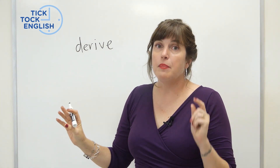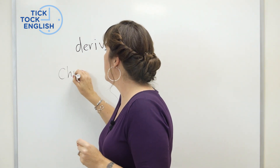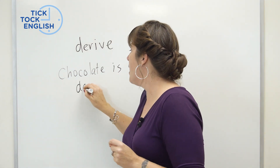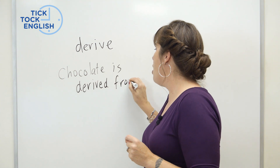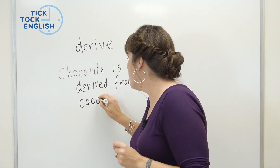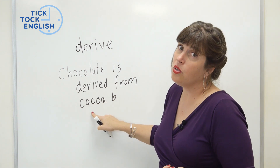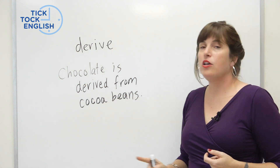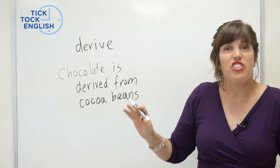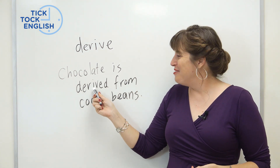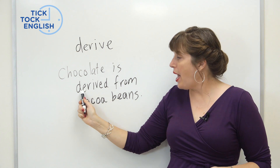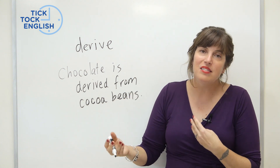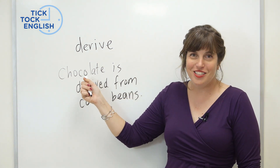Chocolate — I love chocolate, but only dark chocolate. So of course I have a sentence about chocolate. Chocolate is derived from cocoa beans. We say cocoa in English, not cocoa — cocoa beans. Chocolate is derived from cocoa beans. We start with cocoa beans, we process it, and we get delicious chocolate.